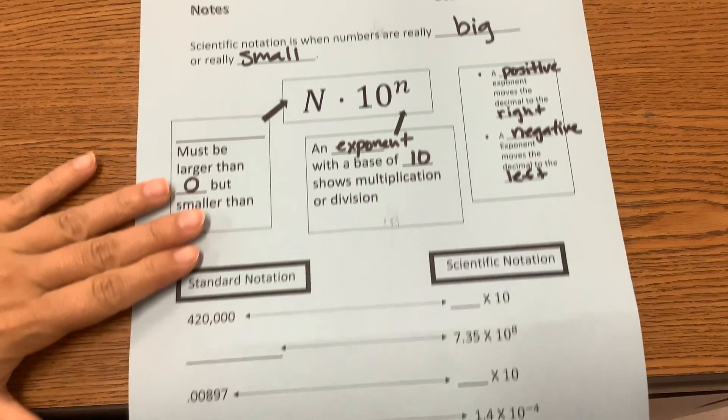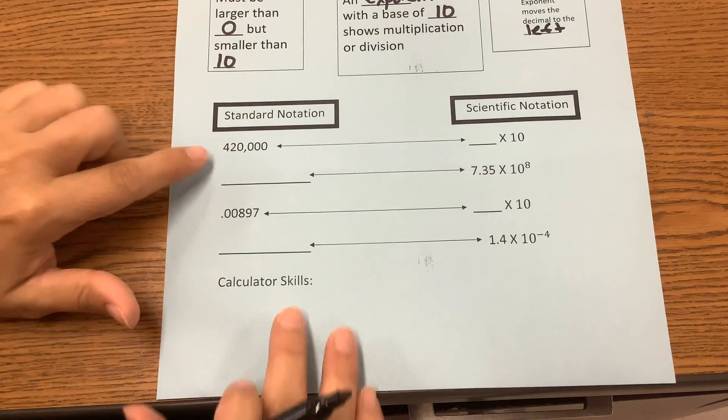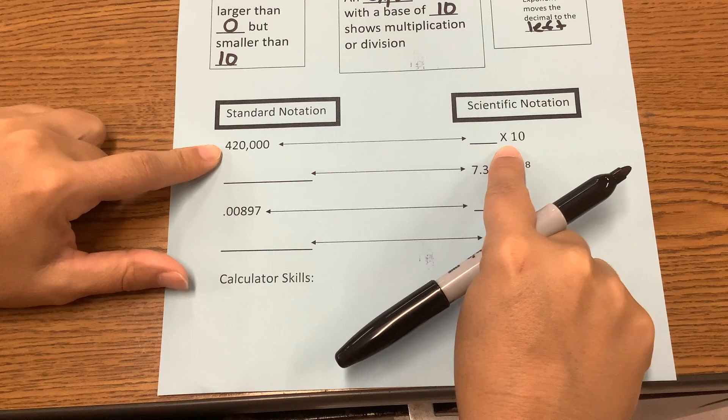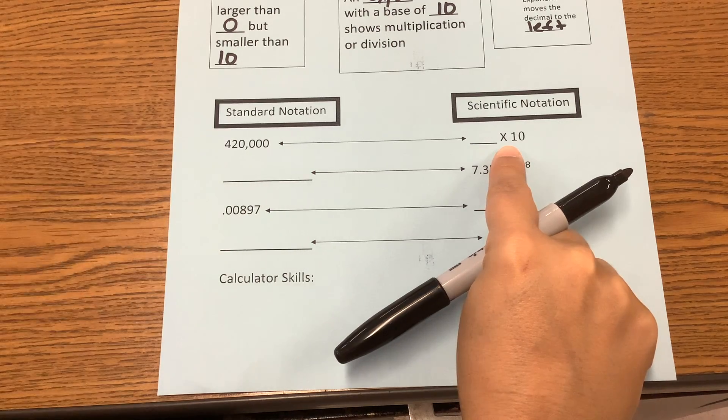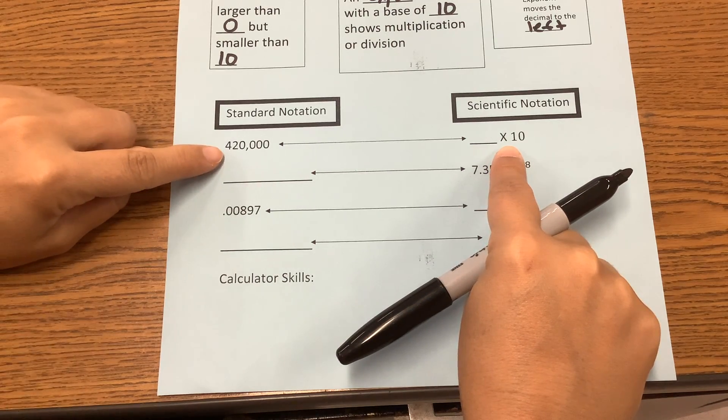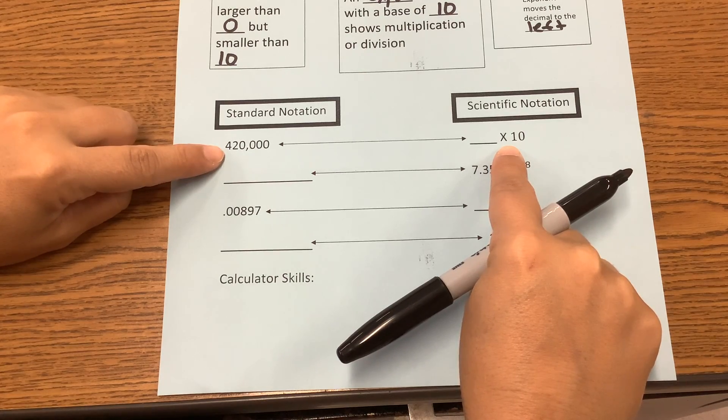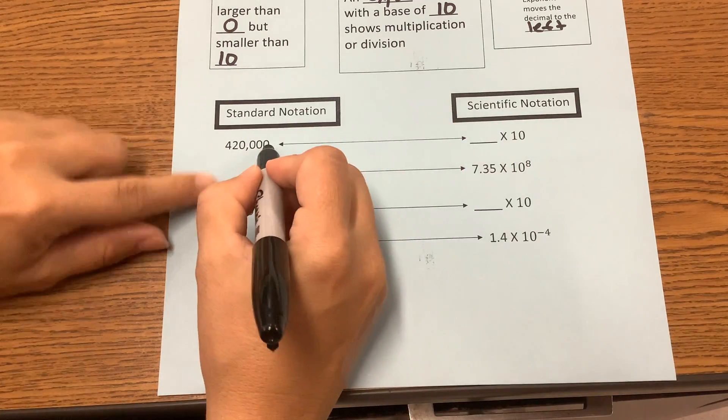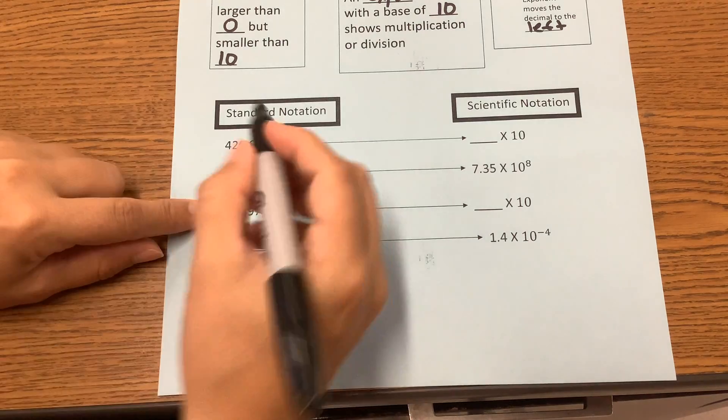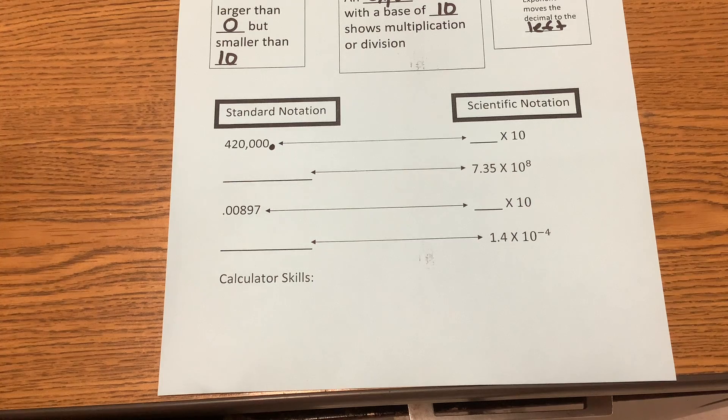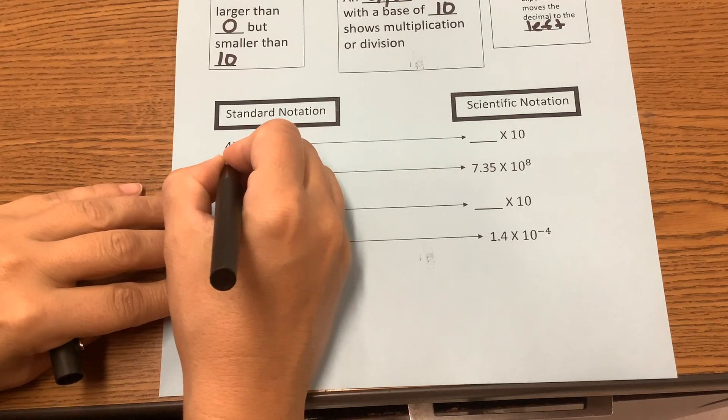Okay, so our standard notation. This is standard notation. Then we're trying to change it to scientific notation. So if we need this to be between 1 through 9, we would have to move our decimal. A decimal is understood to be here on a large number. We don't write them, but they are there whenever it's a whole number.